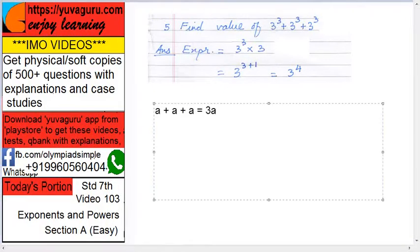Suppose if I ask you, a plus a plus a, what will you say? 3a, means you have added. So what is this actually? 3 into a, 3 multiplied by a. Same logic over here, a plus a plus a, it is 3 into a, right? So 3 into 3 cubed.